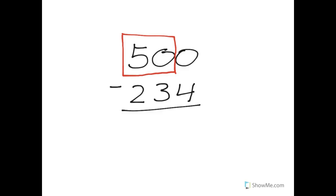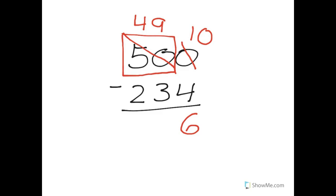So remember, when we go next door, we're going to borrow ten. Our zero in the ones place becomes a ten. And remember, we always borrow one — we take one away. So this fifty, if we take one away from it, becomes forty-nine. We took one group of ten from there and gave it to the ones, and that becomes ten. Now we can subtract like normal. Ten take away four is six. Nine take away three is also six. And four take away two is two. So our answer here is 226.